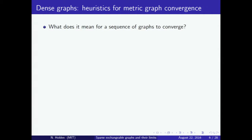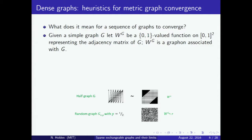What does it mean for a sequence of graphs to converge? I will give one possible definition called metric convergence, which can be used for dense graphs. The idea is that a graph G can be associated with a graphon WG defined on the unit square. WG takes values zero and one and represents the adjacency matrix of the graph. You can see examples on the figure: the half graph and an Erdős–Rényi graph with parameter one half, where one is represented by black and zero by white.